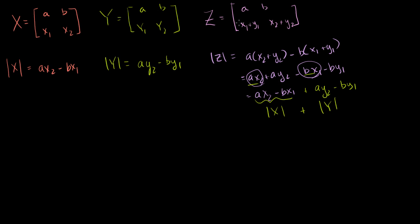If we rearrange, that equals (A·X2 minus B·X1) plus (A·Y2 minus B·Y1), which is the determinant of X plus the determinant of Y. So if matrices are completely identical except for one row, and Z's version of that row is the sum of the other two matrices' rows, then Z's determinant is the sum of the other two determinants. This only works when this row — and only this row — is the sum, and the matrices are identical everywhere else.